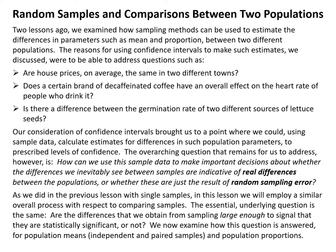Two lessons ago, we examined how sampling methods can be used to estimate the differences in parameters such as mean and proportion between two different populations. The reasons for using confidence intervals to make such estimates were to address questions such as: are house prices on average the same in two different towns, or does a certain brand of decaffeinated coffee have an overall effect on the heart rate of people who drink it?